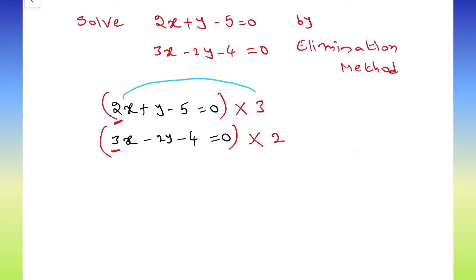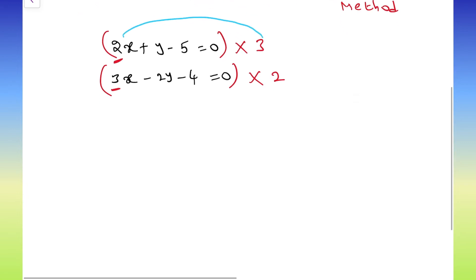This first number we need to multiply with 3. 2x into 3, 6x. Same second term also. y into 3, 3y plus symbol is there. So, plus as it is. The next minus symbol is there, minus as it is. 5, 3 is 15 equals to 0 into anything 0 only.